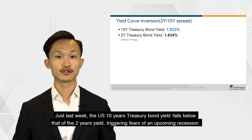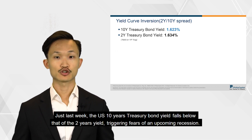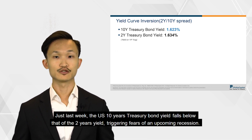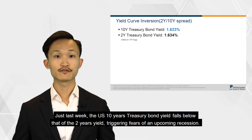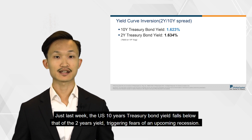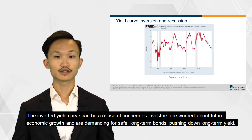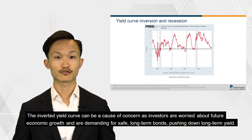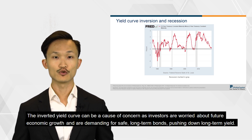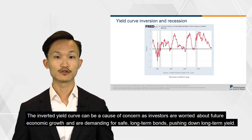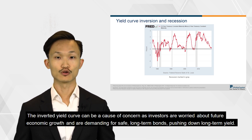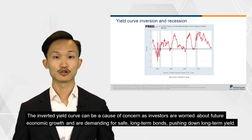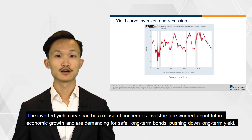Just last week, the US 10-year Treasury bond yield fell below that of the two-year yield, triggering fears of an upcoming recession. The inverted yield curve can be a cause of concern as investors are worried about future economic growth and are demanding safe long-term bonds, pushing down long-term yield.